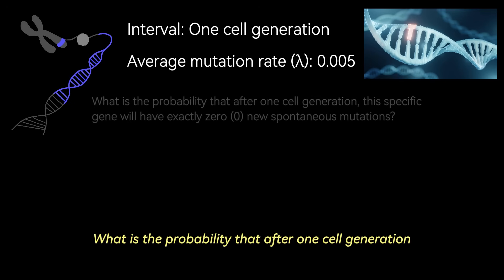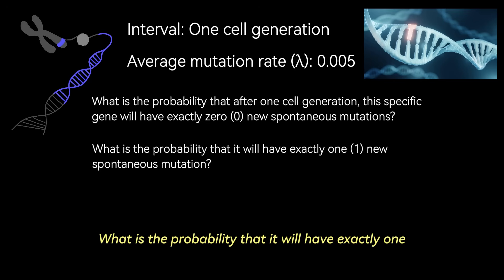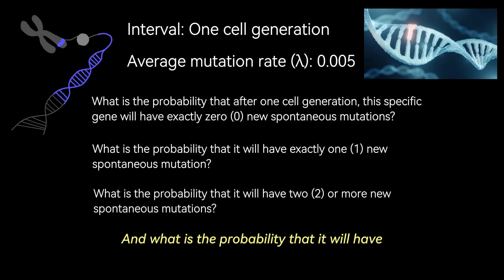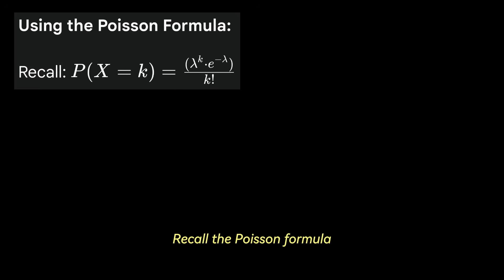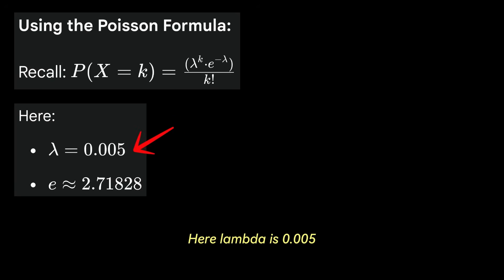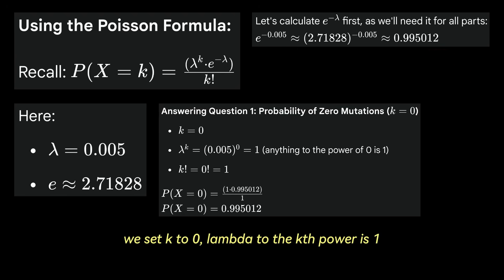Now onto the more interesting questions. What is the probability that after one cell generation, this specific gene will have exactly zero new spontaneous mutations, meaning it's perfectly copied? What is the probability that it will have exactly one new spontaneous mutation? And what is the probability that it will have two or more new spontaneous mutations? This could be more impactful on the gene's function. Recall the Poisson formula. Here lambda is 0.005. Euler's number is approximately 2.71828. We compute e to the minus lambda, which is 0.995. For the probability of 0 mutations, we set k to 0. Lambda to the kth power is 1, and k factorial is 0 factorial, which equals 1.